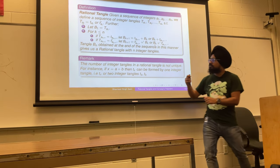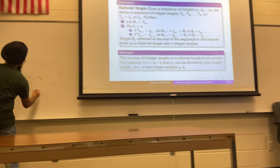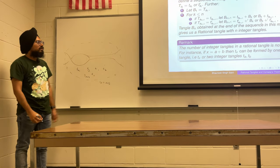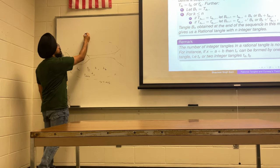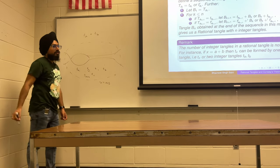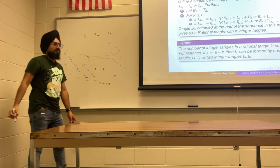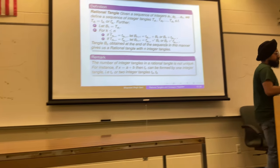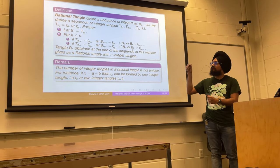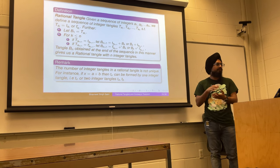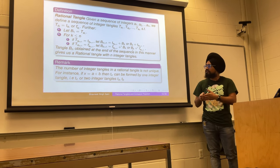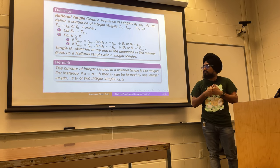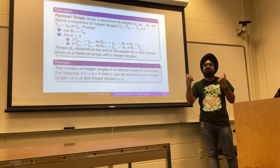Furthermore, if x = a + b, you can represent two tangles T_a and T_b either separately or as T_x. What we're doing is examining all different operations possible on rational tangles and showing that most are ambient isotopic — they can be clubbed together — and at the final stage, a fraction appears.